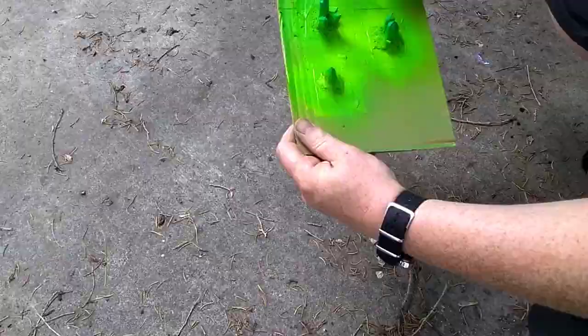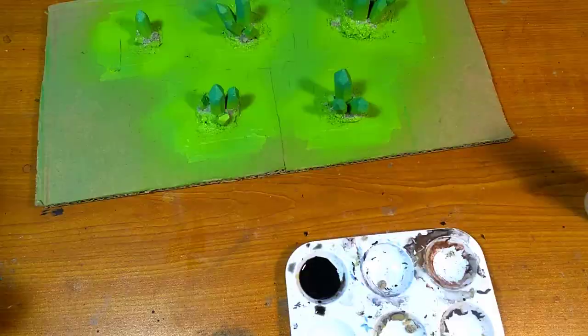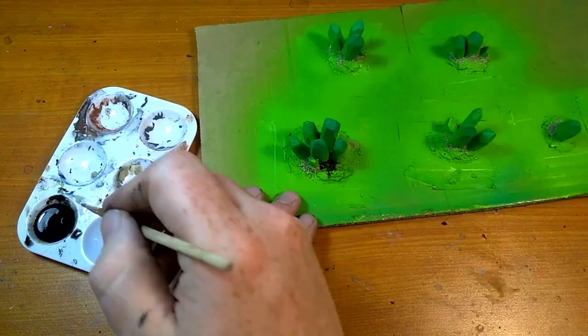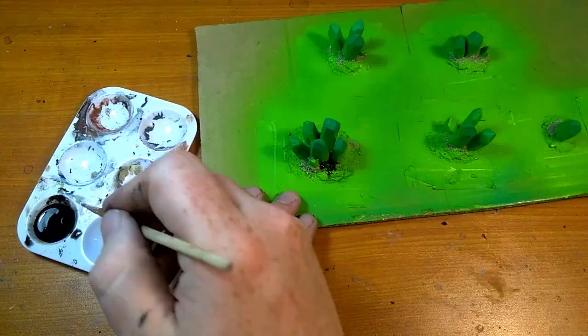After spray painting I decided to do a little more touching up to the bases with sand so that the crystals look like they are growing out of the ground rather than sitting on top of it. Then I start painting the bases black.